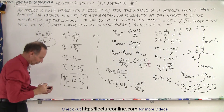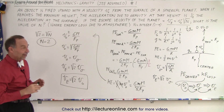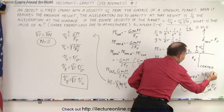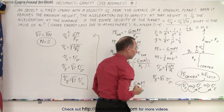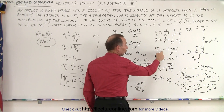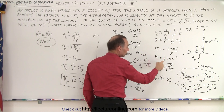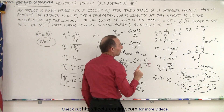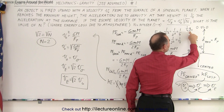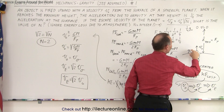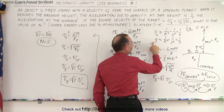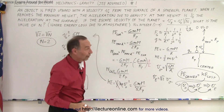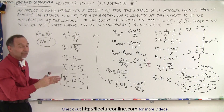That is the correct answer. It all comes down to having a strategy: understanding that potential energy gained equals kinetic energy lost, knowing all the equations for orbital velocity, potential energy, kinetic energy, and escape velocity in terms of orbital velocity — and recognizing that when gravity is one-quarter of the surface value, the object is twice as far from the center, so the height equals the radius of the planet.